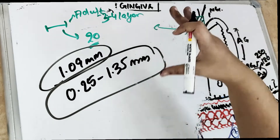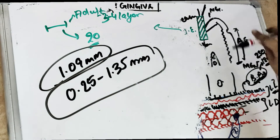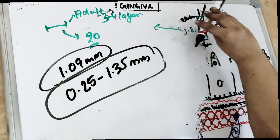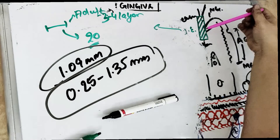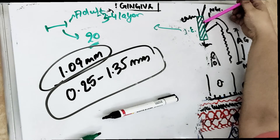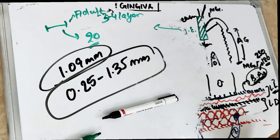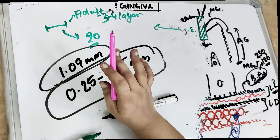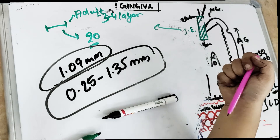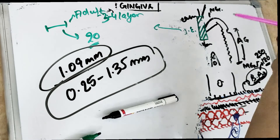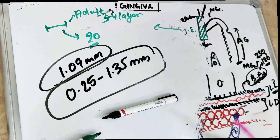The length of junctional epithelium is 0.25 to 1.35 millimeters. Once you probe in the sulcus, you will hit the junctional epithelium and give damage to it. This is why after perio surgeries we do not probe immediately — we wait 4 to 6 weeks before the healing happens and the junctional epithelium is fully formed.